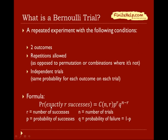Here's the formula. The probability of exactly r successes out of n trials is C(n, r) times p to the r times q to the n minus r, where r is the number of successes, n is the number of trials, p is the probability of success, and q is the probability of failure, which is 1 minus p.